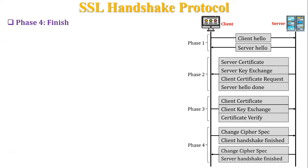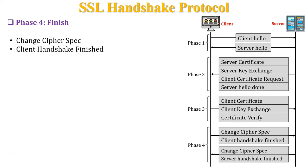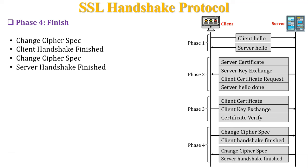In both messages of Phase 4 there are two fields: change cipher spec and handshake finished. The client-side change cipher spec is a message telling about the current status of cipher protocols and parameters which have been made active from pending state. The client handshake finished message announces the finish of the handshake protocol from the client side. After completion of Phase 4, the connection between client and server is established successfully.